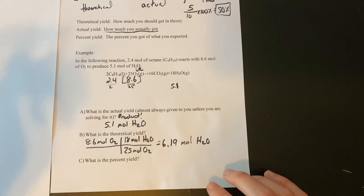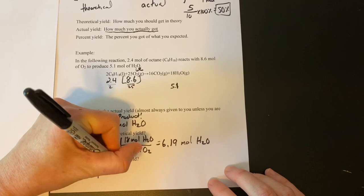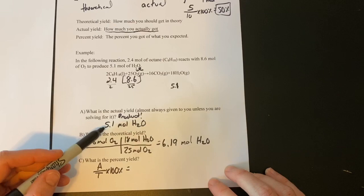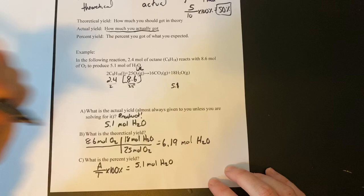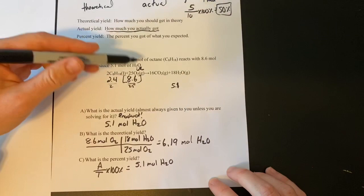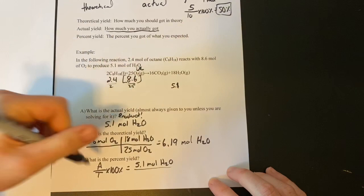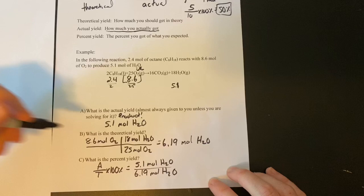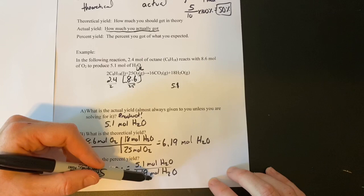Now, it says, what is the percent yield? Well, if you remember, percent is actual over theoretical times 100%. Well, we know our actual yield was 5.1 mole of water, that's how much we actually made when we reacted this stuff together. But, in theory, if everything that could react did, in other words, if all the limiting reactant actually was able to react, we would have gotten 6.19 mole of water.